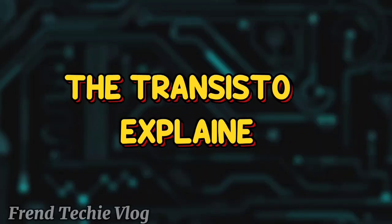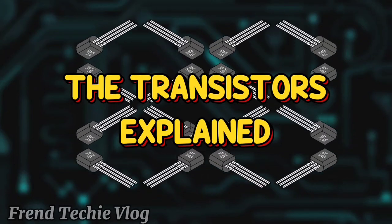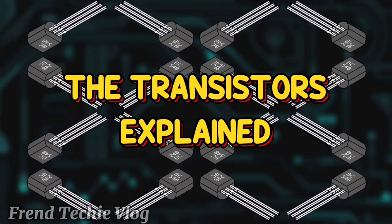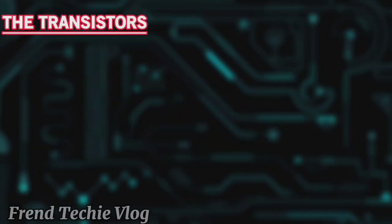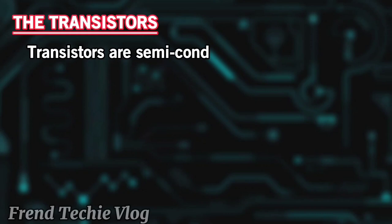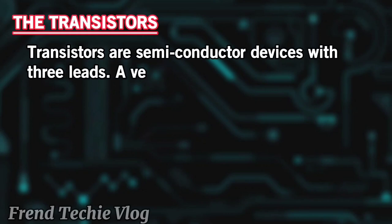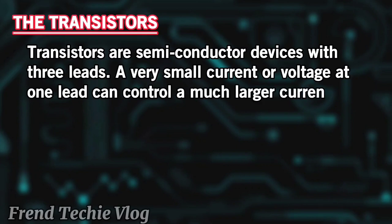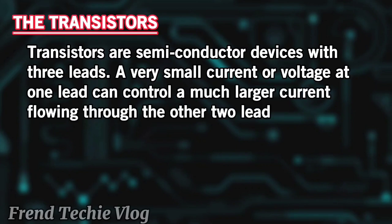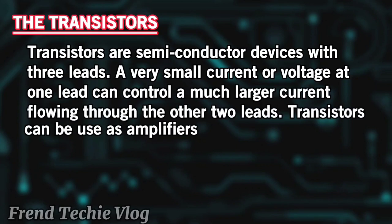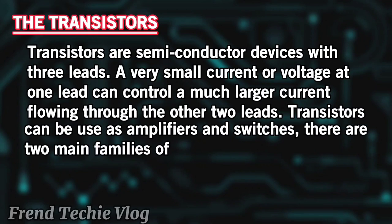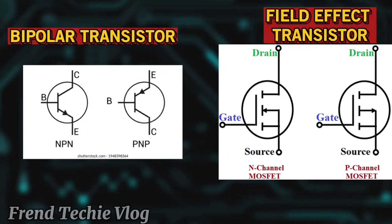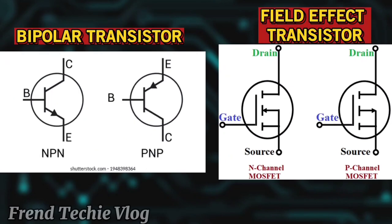Transistors are semiconductor devices with three leads. A very small current or voltage at one lead can control a much larger current flowing through the other two leads. Transistors can be used as amplifiers and switches. There are two main families of transistors: the bipolar transistor and the field effect transistor.